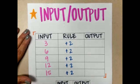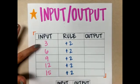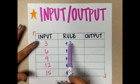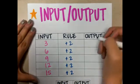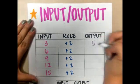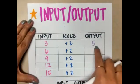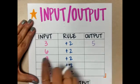So right here I have the number 3. I'm going to follow the rule plus 2. So 3 plus 2 is 5. So my output number, the number that's going to come out, is 5.